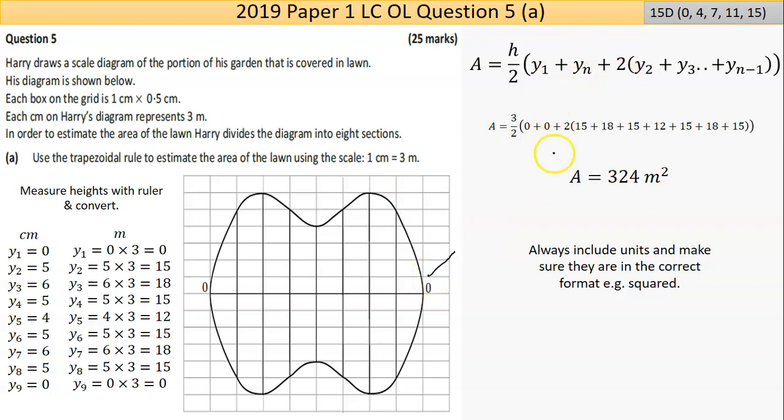Then twice, so two times all the rest of them. The first one there was 15 plus the 18 plus the 15. Again, all those figures I have written out here, they're added together.